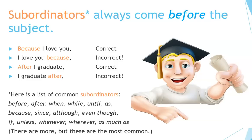In some other languages it's done differently, but in English we always put the subordinator — the extra word — before the subject and verb. Here is a list of common subordinators: before, after, when, while, until, as, because, since, although, even though, if, unless, whenever, wherever, as much as. There are more, but these are the most common ones.